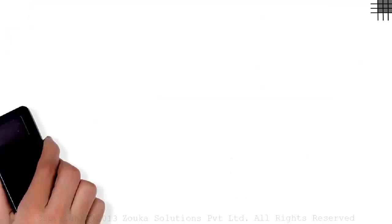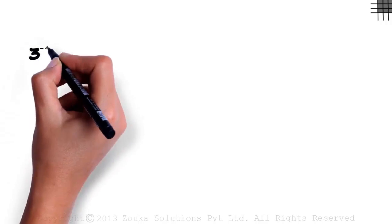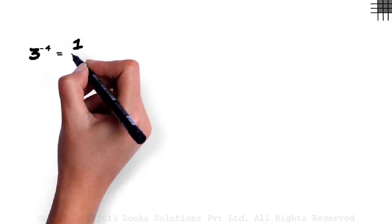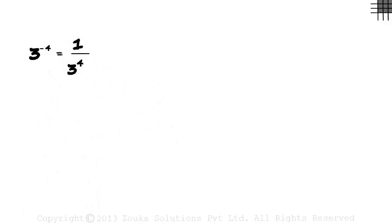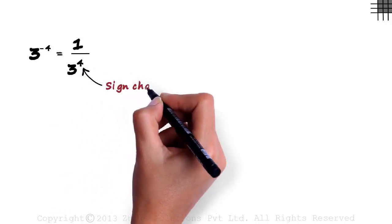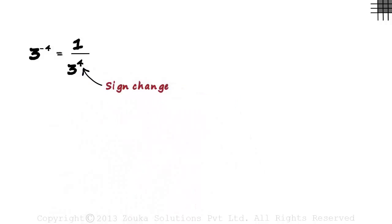There's a very simple trick we need to understand here. Consider 3 raised to minus 4. When we have to write it down as a positive exponent, it equals 1 divided by 3 raised to 4. So all we did here is change the sign of the exponent and wrote it under 1.